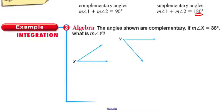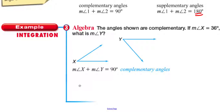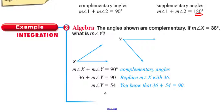The secret word for this lesson is flip-flop. Example three: the angles shown are complementary. If the measure of angle X is 36 degrees, what is the measure of angle Y? Since they're complementary, the measure of angle X plus the measure of angle Y equals 90 degrees. We know angle X is 36, so we subtract 36 from both sides — we end up with 54. The measure of angle Y is 54 degrees. And that's the end of our lesson, thanks for watching.